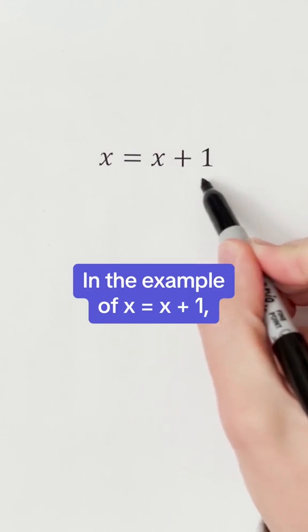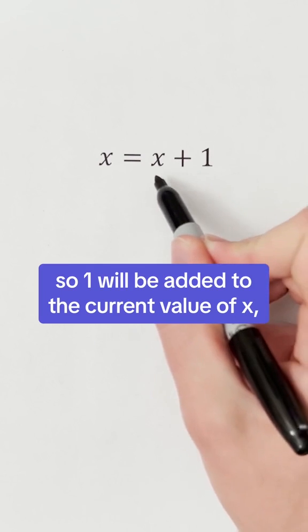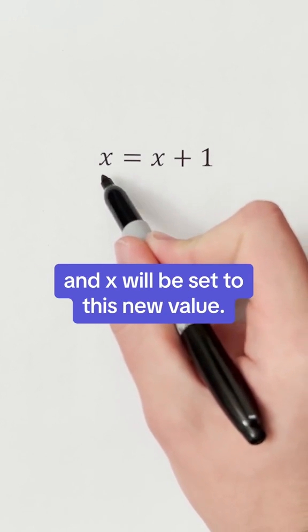In the example of x equals x plus 1, the value that will be set for x is the value of x plus 1. So 1 will be added to the current value of x, and x will be set to this new value.